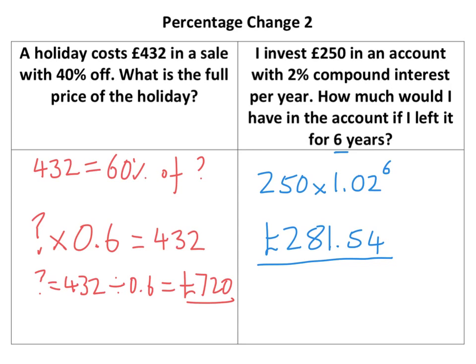After two years, you'd have £250 plus 2% of that £250, plus 2% of what was in there again. And so hence the power of six works — you're essentially adding 2% each year.